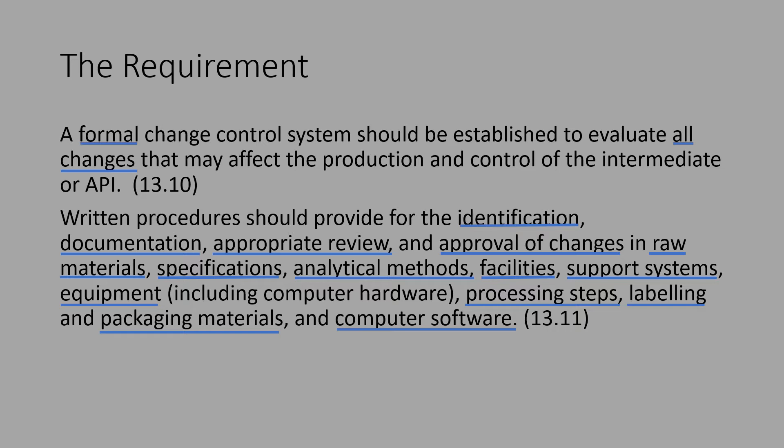What is a formal change control system? It is a written-down system and not a verbally communicated, unwritten system. Such an established system is necessary to evaluate all changes — meaning all the activities from start to finish within the GMP ambit, from material entry to finished product out.